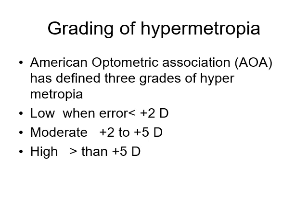Regarding grading of hypermetropia, the American Optometric Association has defined three grades. Low hypermetropia is less than plus 2 diopters, moderate is plus 2 to plus 5 diopters, and high is more than plus 5 diopters.